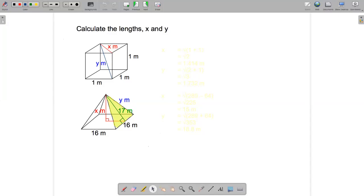So for the first example, we've got a unit cube here. That's one meter by one meter by one meter. And I want to know two lengths inside or on the surface of the cube. One's on the surface, one's on the interior.